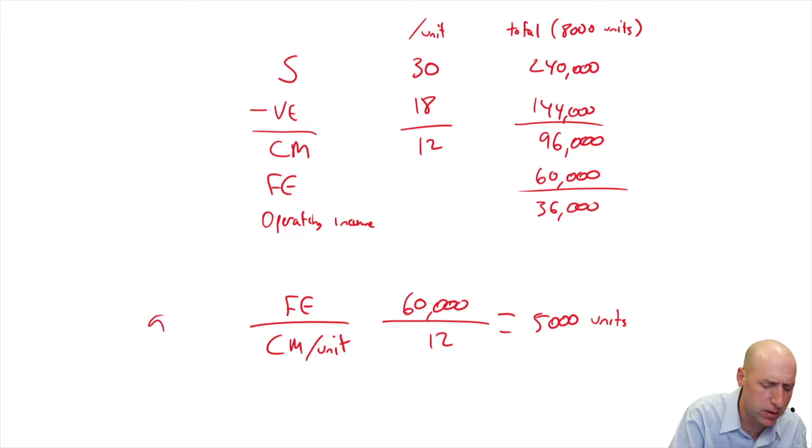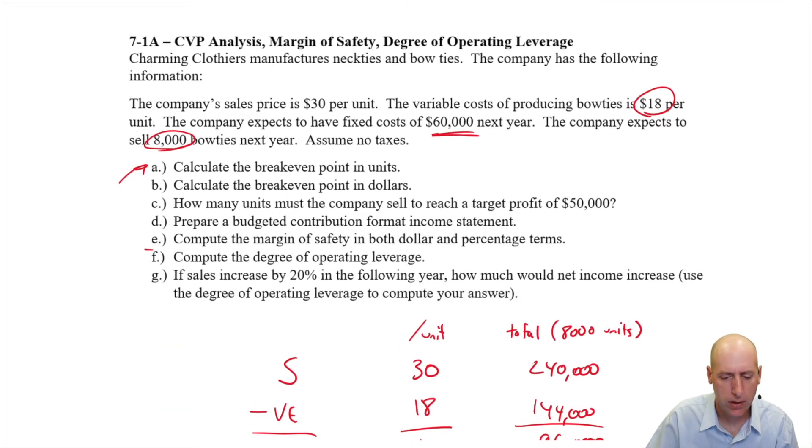$60,000 divided by $12 is 5,000 units. 5,000 bow ties in order to break even. Okay, there we have it. We have answered part A.